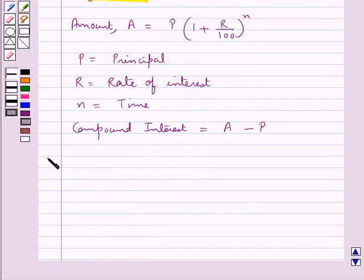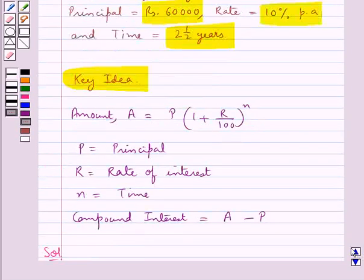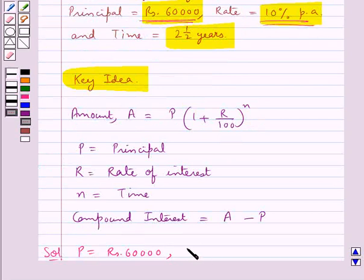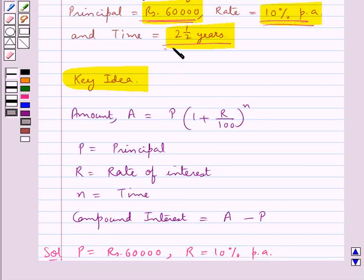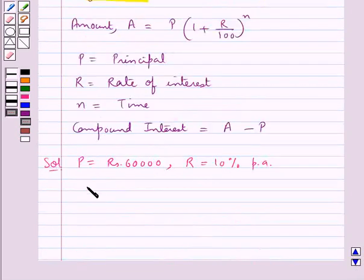Now let's move on to the solution. We are given the principal as Rs 60,000, that is P is equal to Rs 60,000, rate as 10% per annum, that is R is equal to 10% per annum, and time equal to 2.5 years, that is N is equal to 2.5 years.